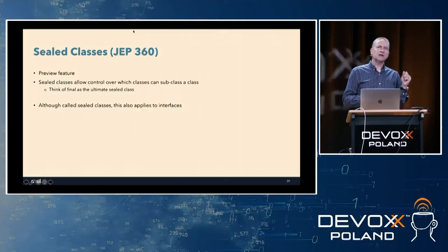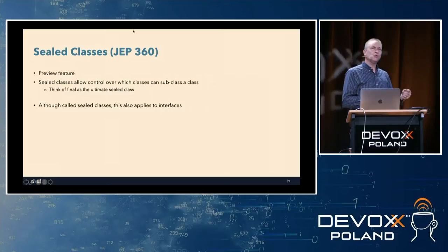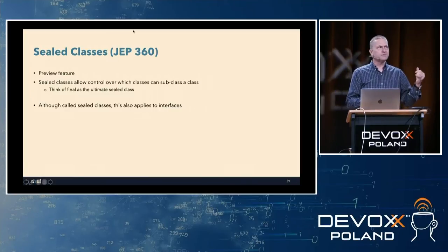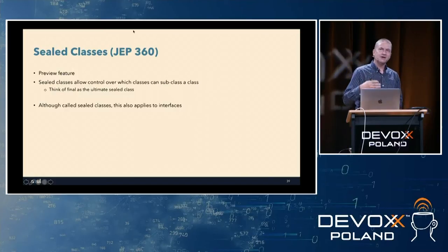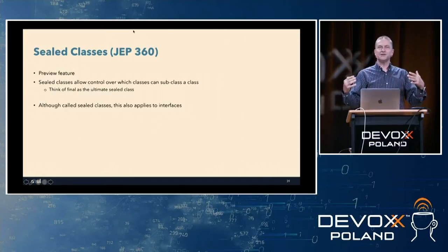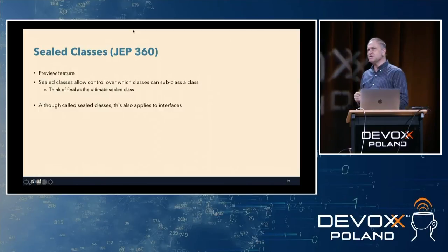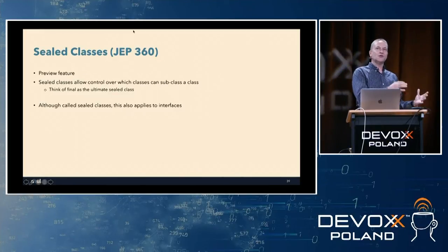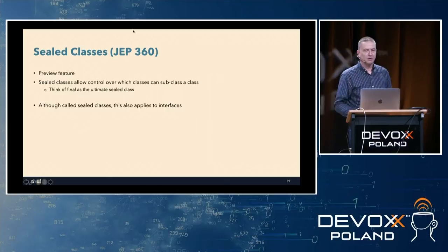I thought to myself: why do they call it sealed classes? It also applies to interfaces, and I thought wouldn't you want to call it sealed types? I tweeted about that, and one of the Java engineers replied saying it's because interfaces are actually just a special form of class. I didn't realize that, but apparently they are. So they decided to call it sealed classes rather than sealed types.